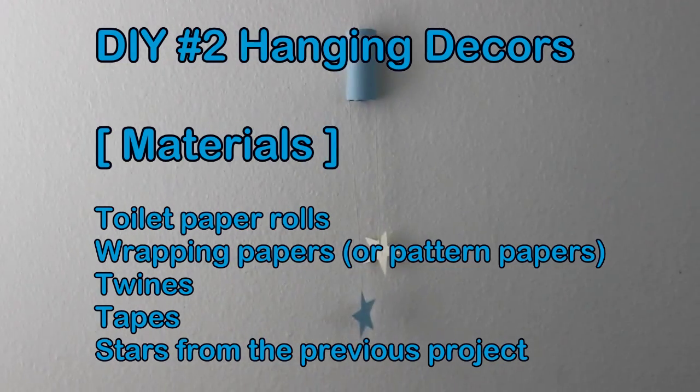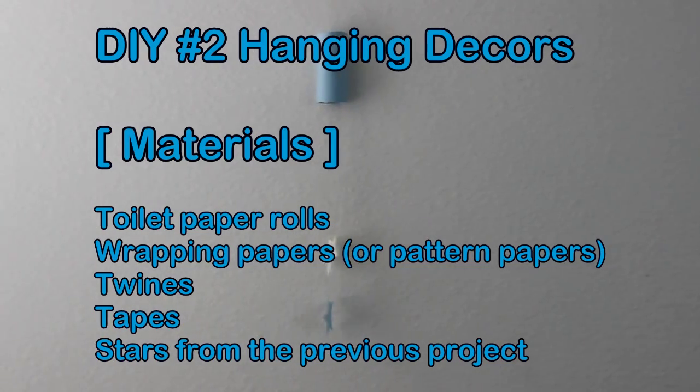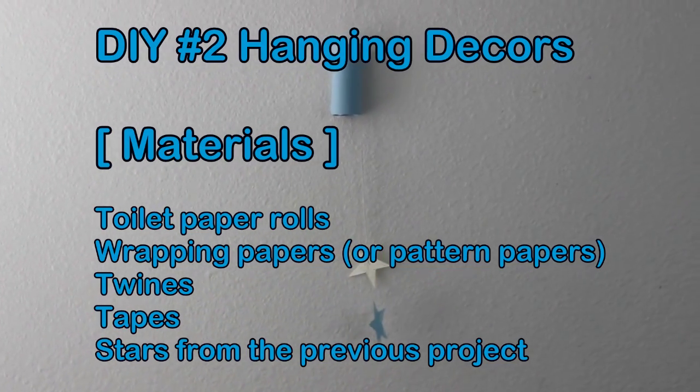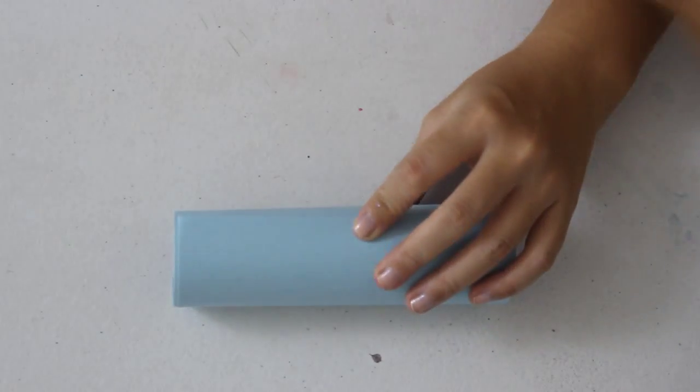If you don't have any pattern paper or wrapping paper, you can use a simple white paper and draw or decorate them however you want. First, cut out the wrapping paper length that will fit the toilet paper roll all around.